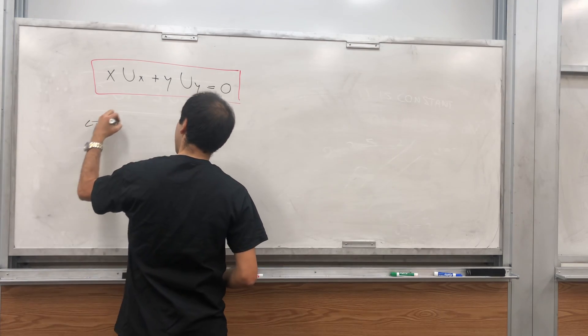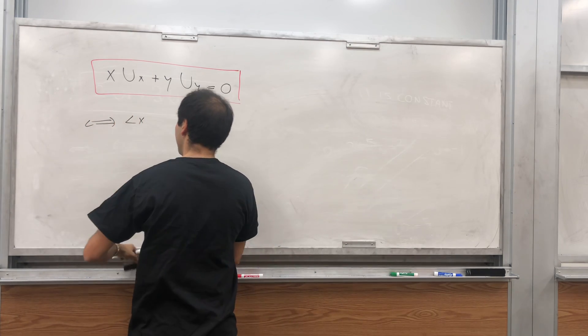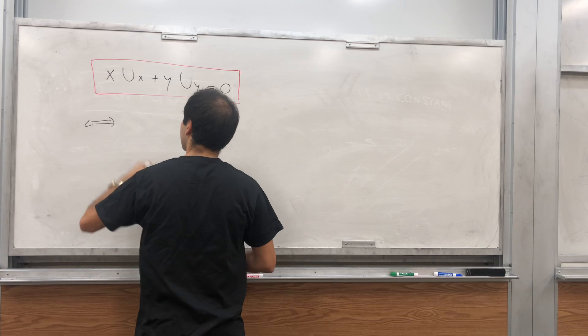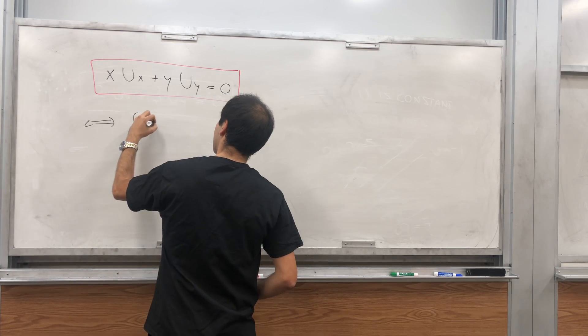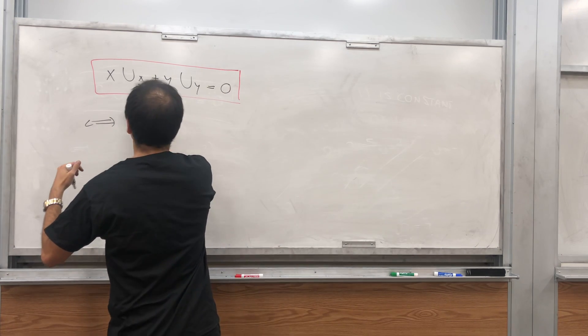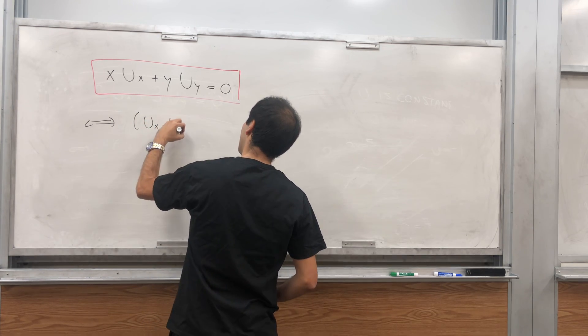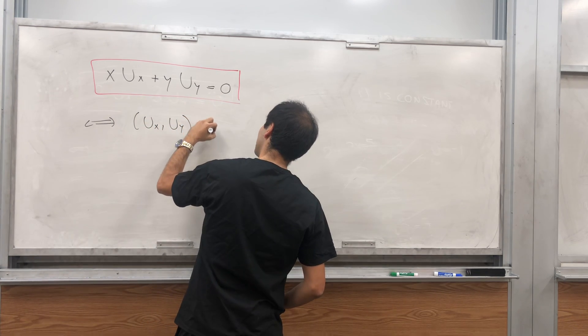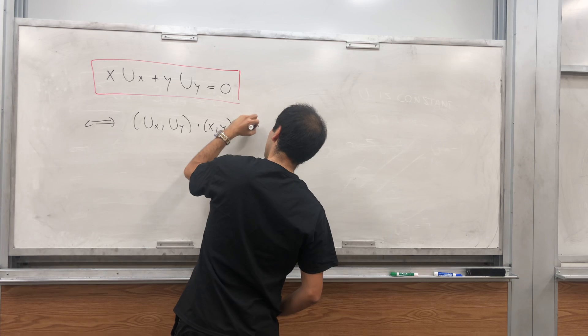This is the same thing as saying u_x comma u_y dotted with x comma y equals zero.